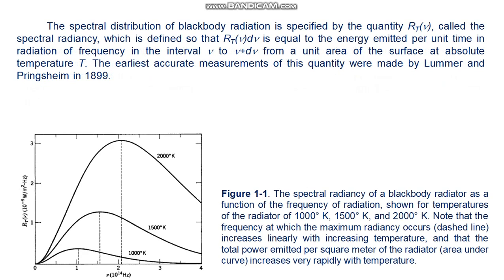The spectral distribution of blackbody radiation is specified by the quantity R_T(ν), called the spectral radiancy, which is defined so that R_T(ν)dν is equal to the energy emitted per unit time in radiation of frequency in the interval ν to ν+dν from a unit area of the surface at absolute temperature T. The earliest accurate measurements of this quantity were made by Lummer and Pringsheim in 1899.